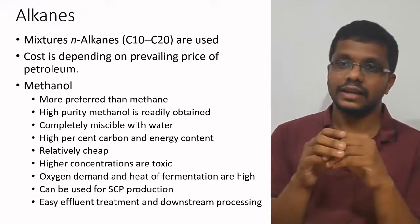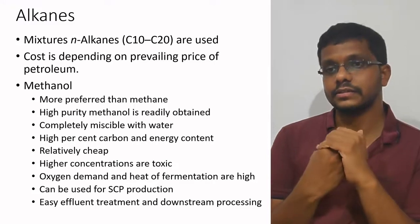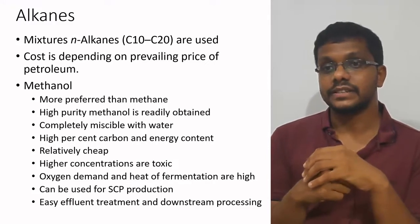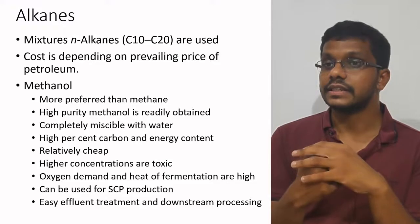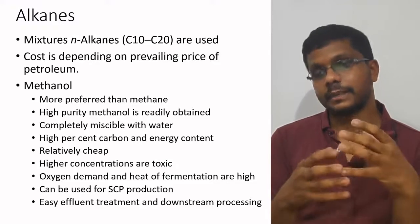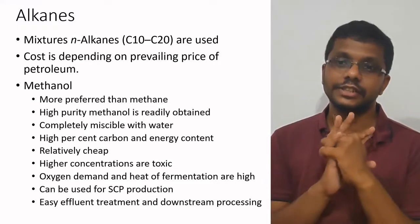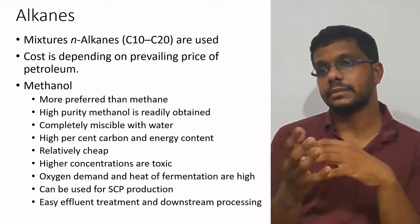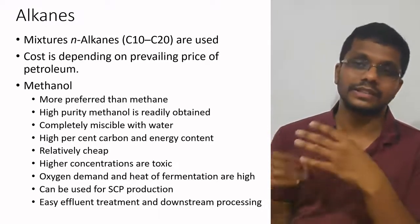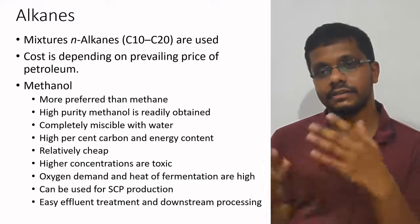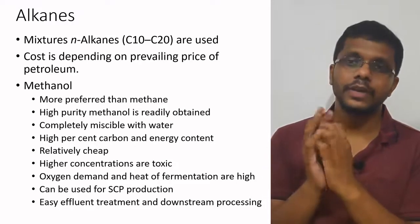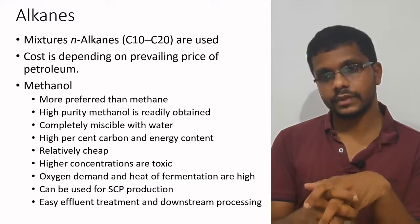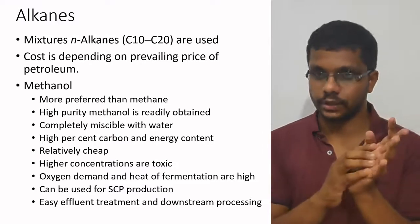Alkanes are obtained from the petrochemical industry. A mixture of n-alkanes with carbon numbers 10 to 20 are used in industry. Their cost basically depends on the prevailing oil price — if crude oil price is high, the alkane cost will be high, and vice versa. The most widely used alkane is methanol.